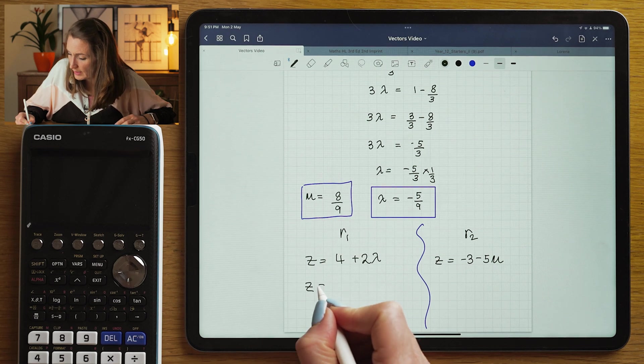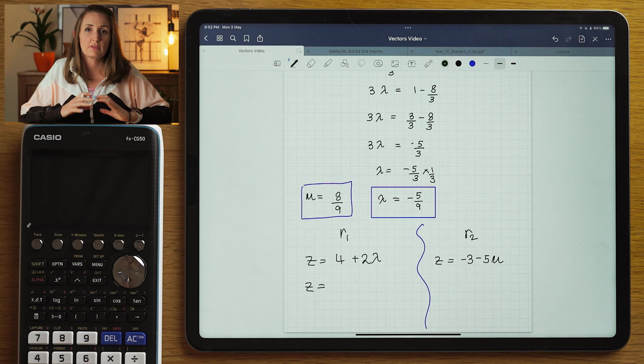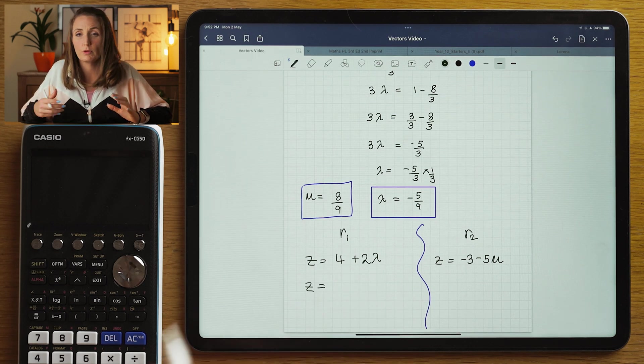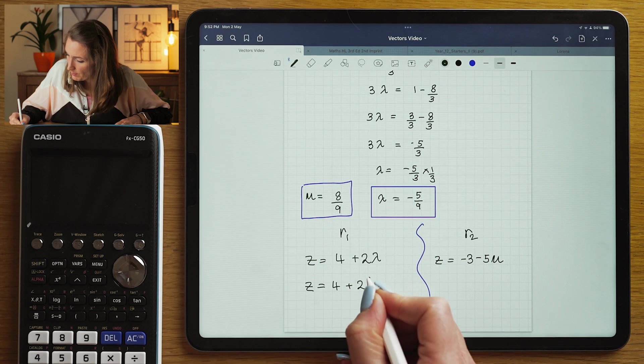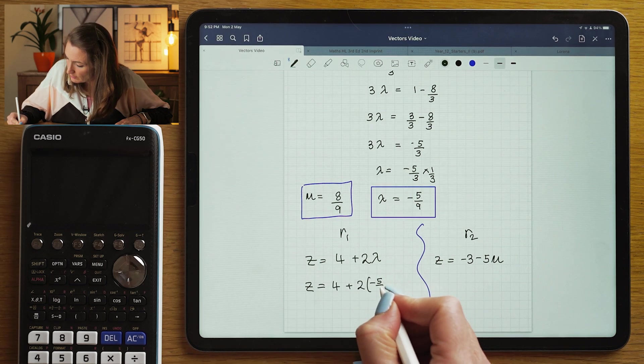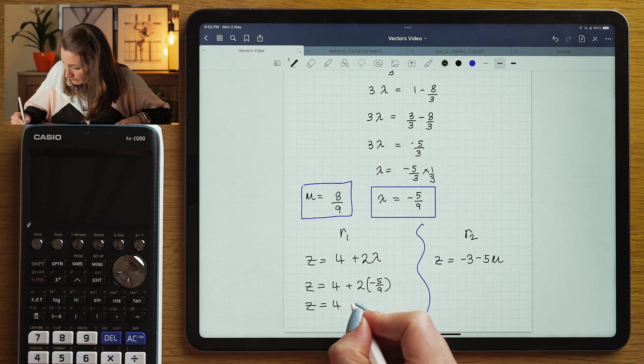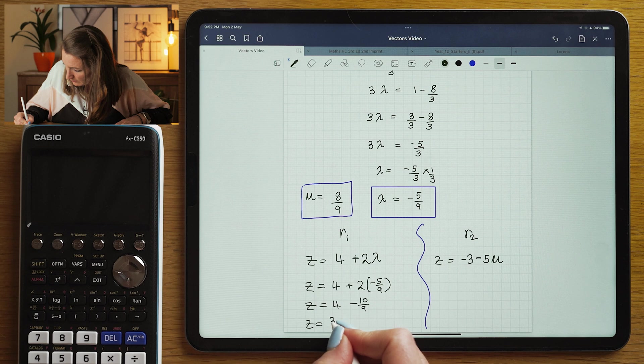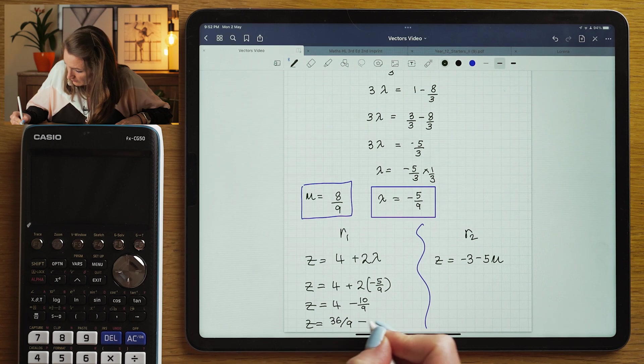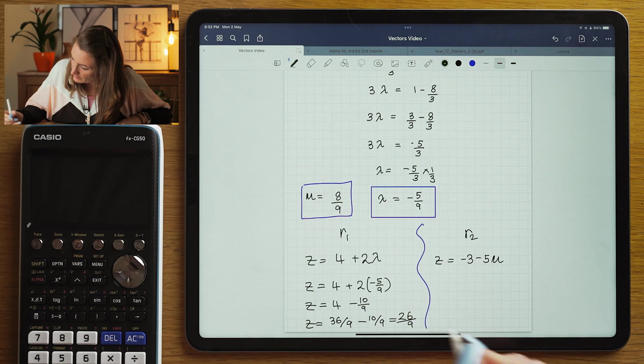So if I substitute my value in here, if I've solved the equation correctly, these z values should be equal, right? That would prove that there was in fact a point of intersection. So let's check. If I put lambda in here, 2 times minus 5 over 9, so now I get z is 26 over 9.